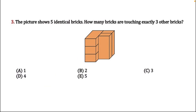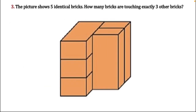There are five identical bricks placed differently. The left side is stacked up, and the right side bricks are placed next to the stacked-up bricks. What we need to find is the total number of bricks that are touching exactly three other bricks. I have zoomed in the picture so you can easily get the logic of this question.